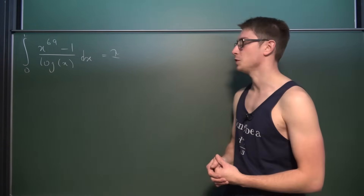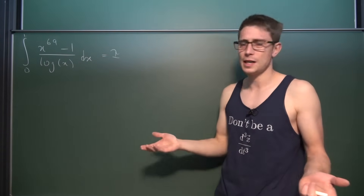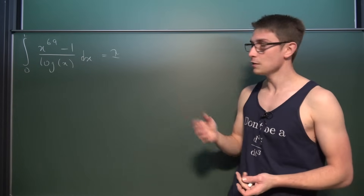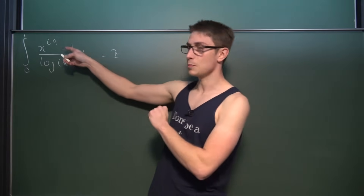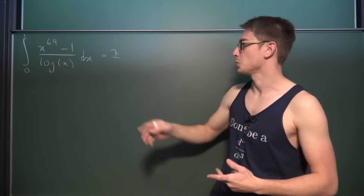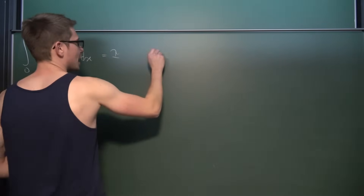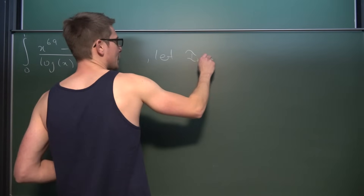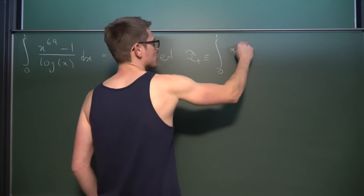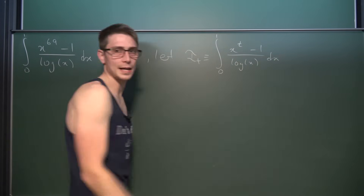To use Feynman's technique, you introduce a parameter t (greater than zero) as the exponent of x. I define the new parametrized integral i(t) as the integral from zero to one of x to the t-th power minus one, divided by the natural log of x, integrated with respect to x.